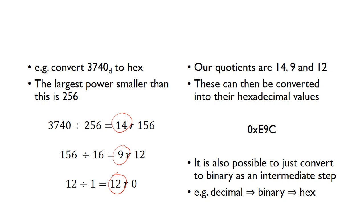That might seem a bit convoluted. You can cheat if you will, you can get a decimal number, convert it to binary, and then convert the binary to hex as an intermediate step, because that can sometimes be a bit quicker.